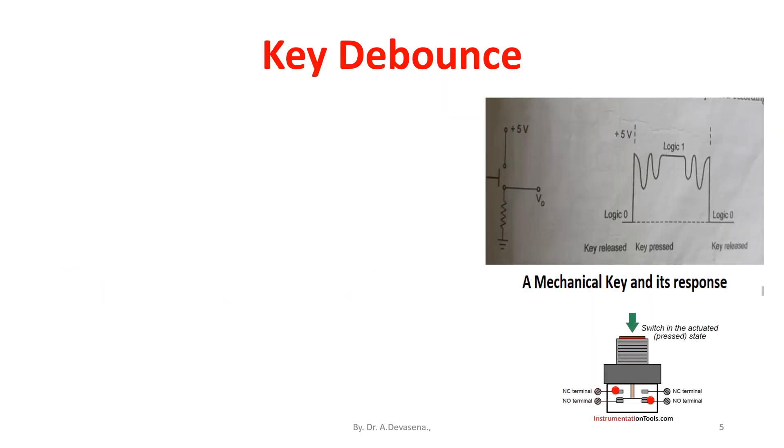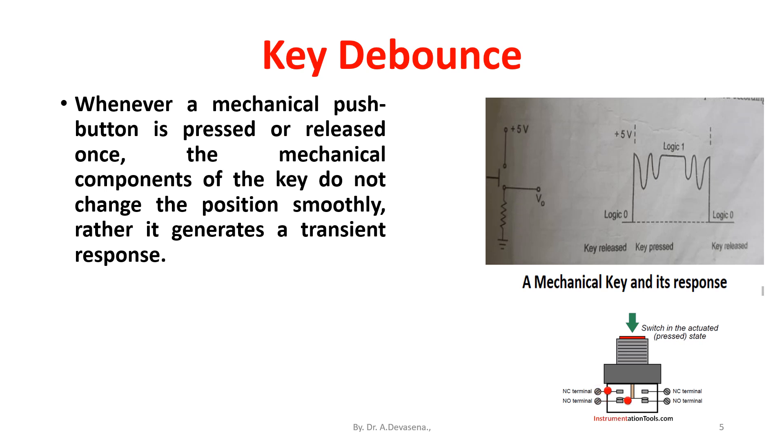Key debounce. Whenever a mechanical push button is pressed or released once, the mechanical components of the key do not change position smoothly. Rather, it generates a transient response. This may be interpreted as multiple pressures and responded accordingly.